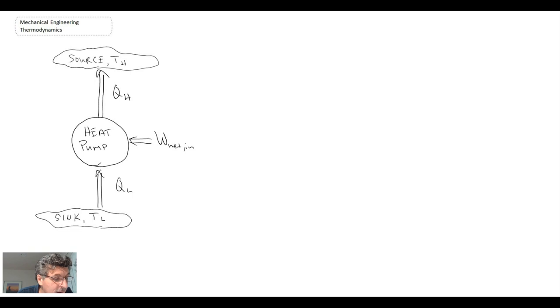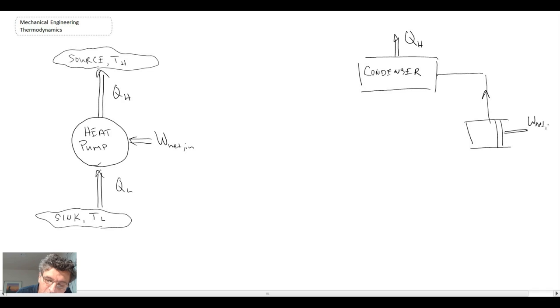Now in terms of a schematic of a cycle, we would have a condenser whereby our working fluid is rejecting heat. Before that, in the process, what we would have is a compressor. So the fluid is coming out of the compressor and flowing into the condenser. And here is where we do our network in.